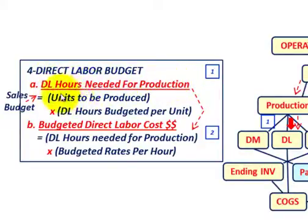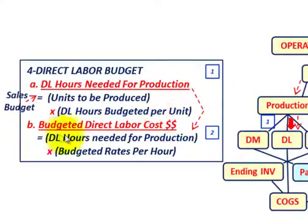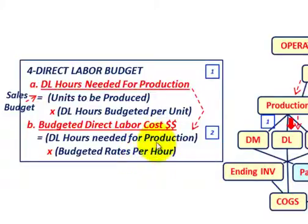Coming from our sales budget and production budget, we determine the units that have to be produced, then multiply by the direct labor hours budgeted on a per unit basis — giving us the direct hours needed for production. Then we determine the budgeted direct labor cost by taking the direct labor hours needed and multiplying by the budgeted rate per hour.